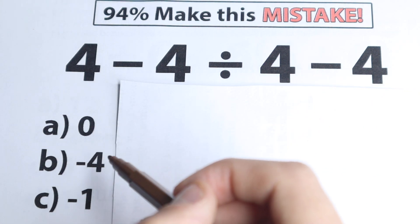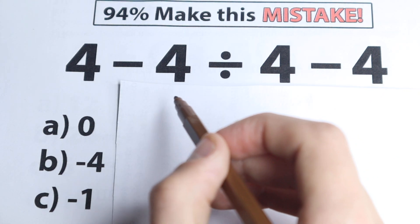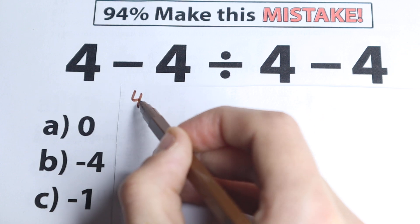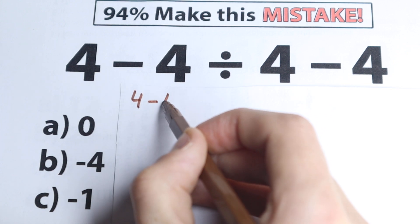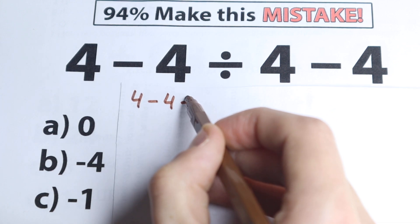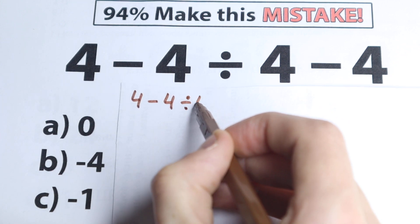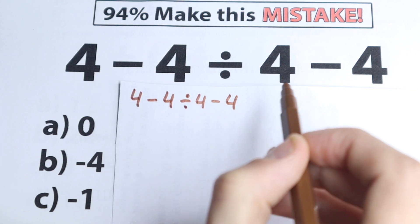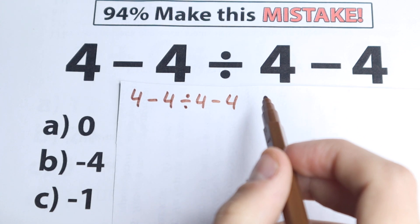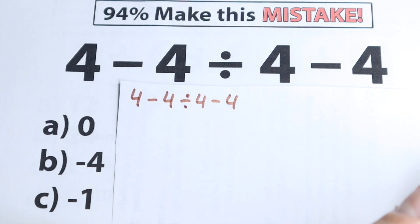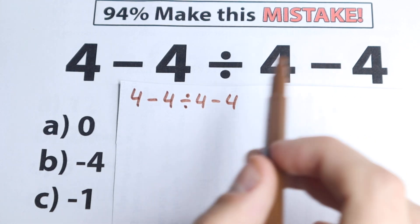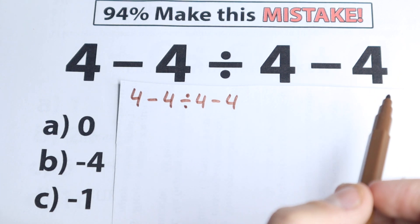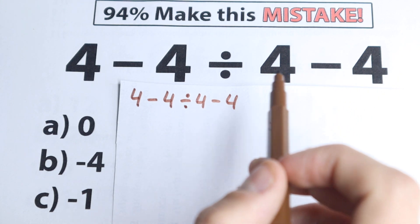Here's our question, here are our options, and let's try to solve it. We have 4 minus 4 divided by 4 and minus 4. So one part of students solve it like this — and I don't want to tell you that this is correct or incorrect, I just want you to look at this solution.